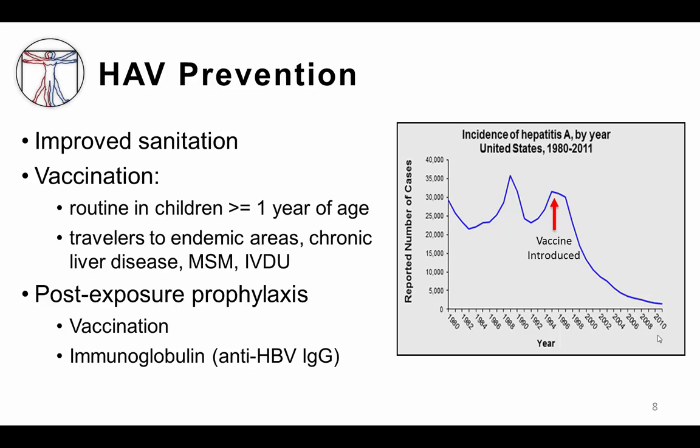Public health measures such as improvement in sanitation and hand-washing awareness can help decrease the spread of this infection. Additionally, hepatitis A vaccination was introduced in 1995 and is now recommended routinely for all children who are one year of age or older. For people who have not already been vaccinated or are unsure of their vaccination status, the hepatitis A vaccine is recommended.